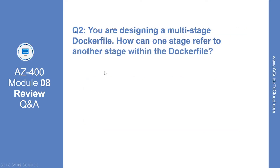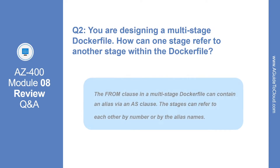You are designing a multi-stage Dockerfile. How can one stage refer to another stage within the Dockerfile? The FROM clause in a multi-stage Dockerfile can contain an alias via the AS clause. The stages can refer to each other by number or by the alias names.